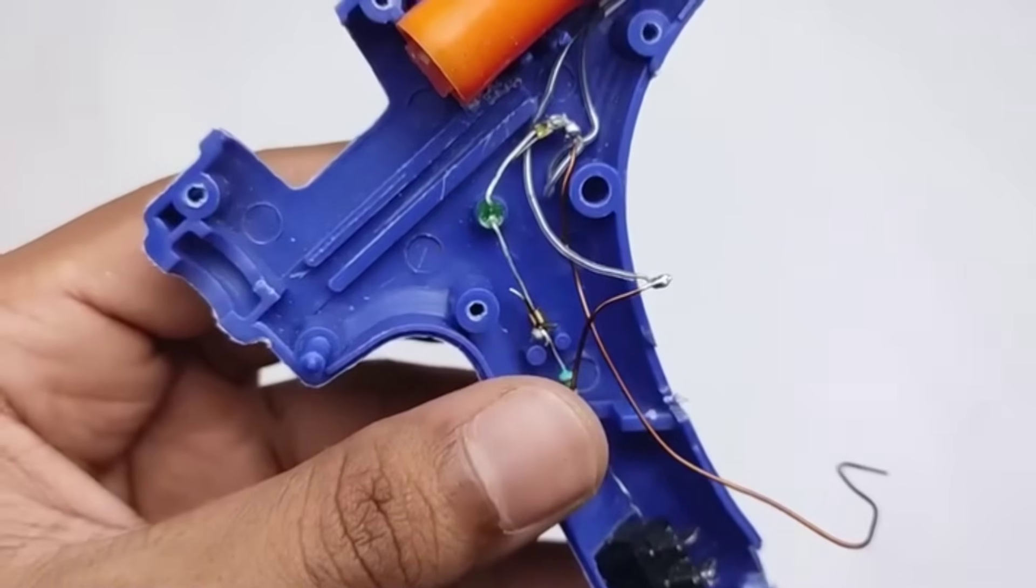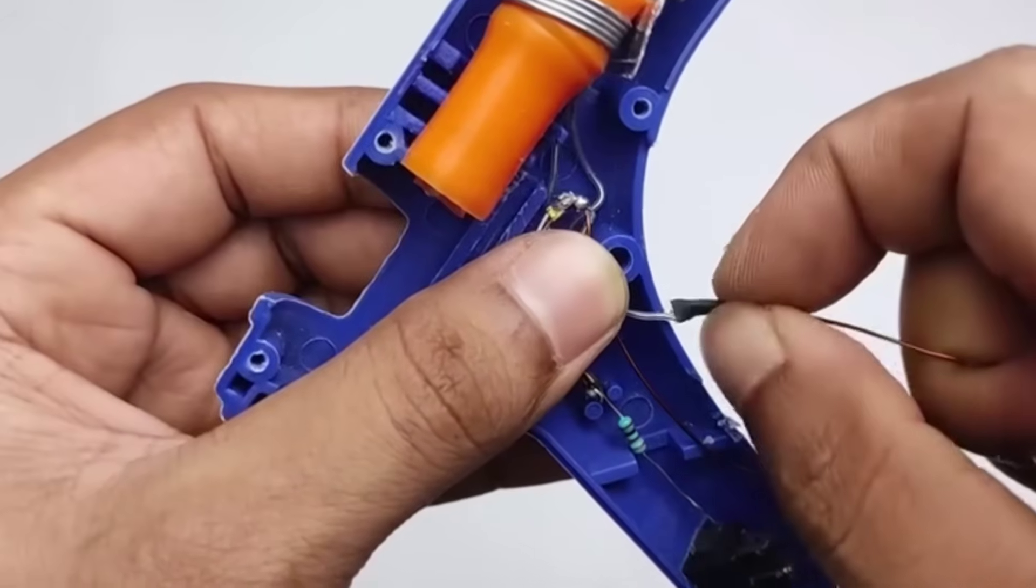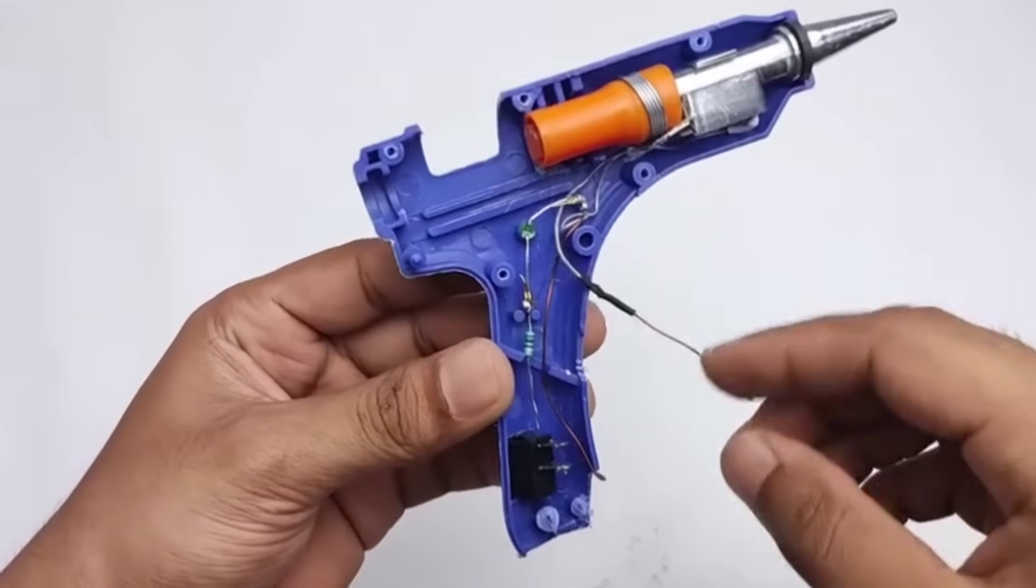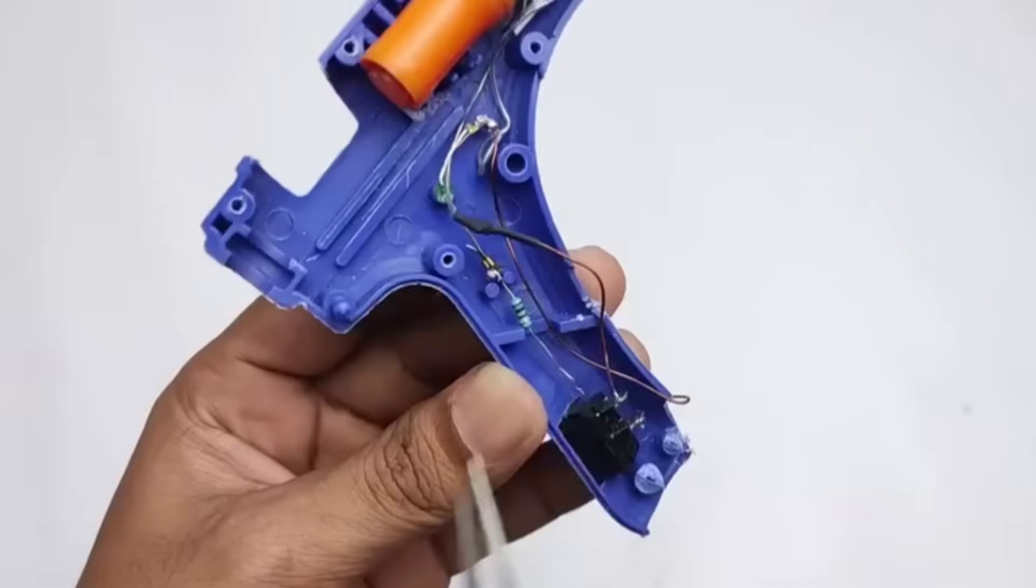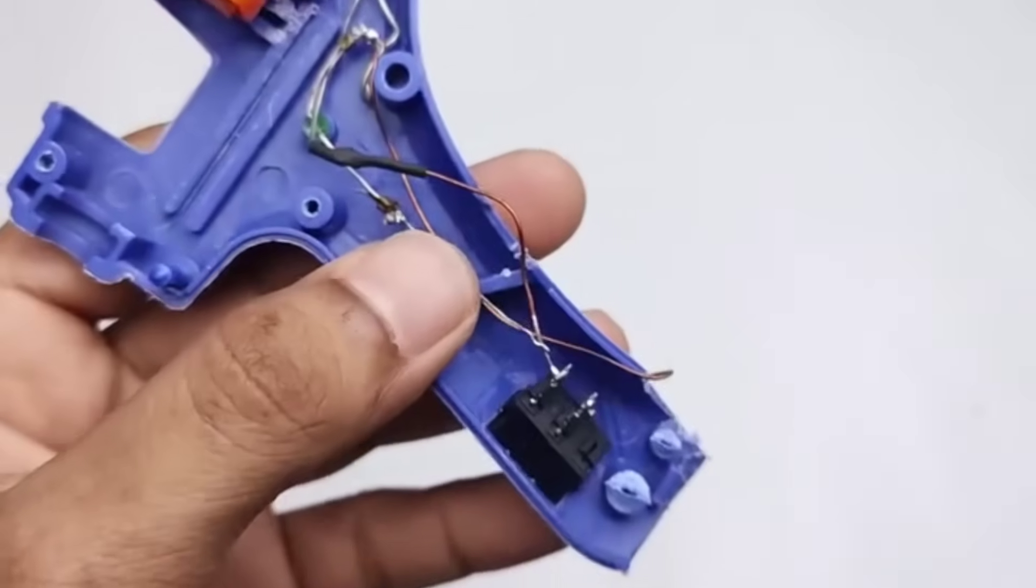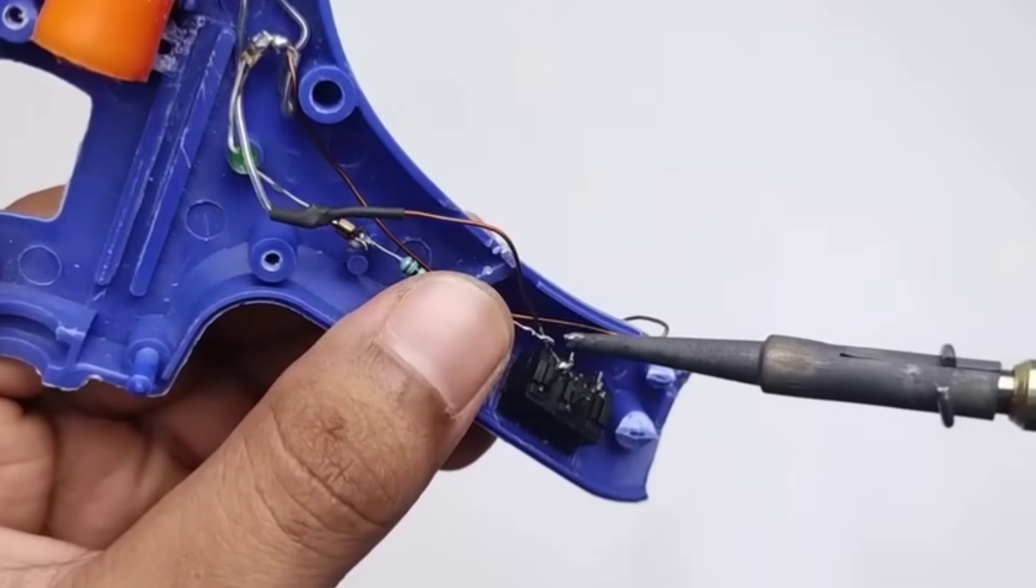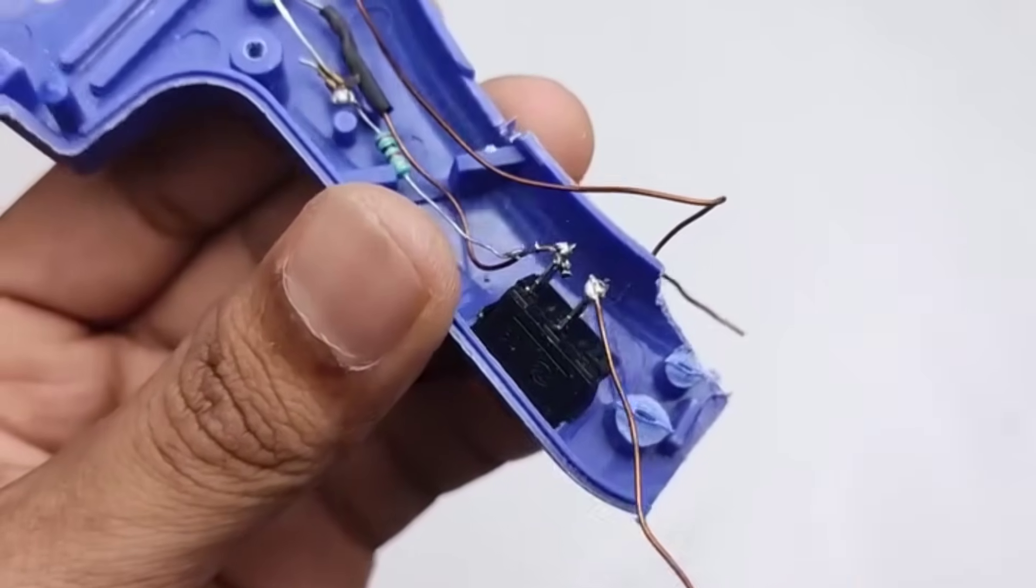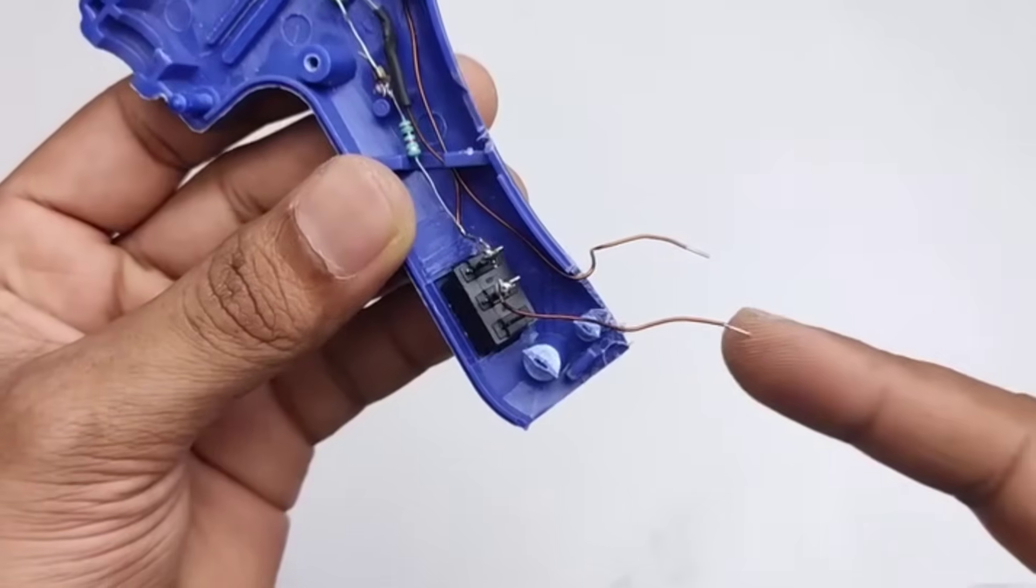We've carefully connected all the wires, making sure each one is properly insulated using heat sleeves and secured in place. I used a small gas lighter to gently heat the sleeves so they fit snugly over the wires for extra safety. Next, I complete any remaining soldering work, ensuring that all connections are strong, neat, and reliable. This step is crucial to make sure the glue gun functions safely and efficiently.